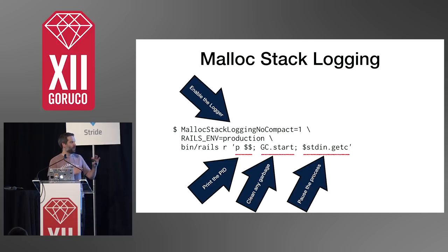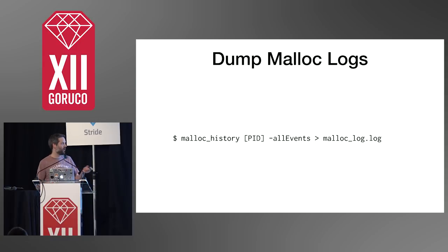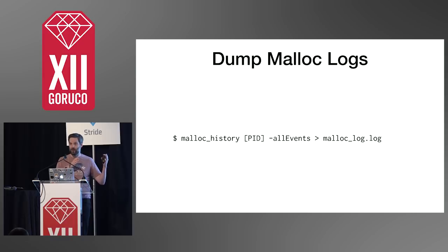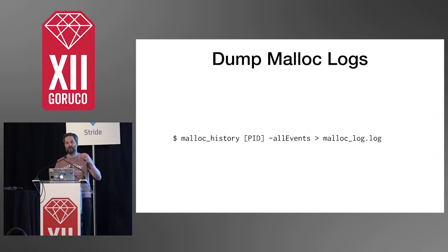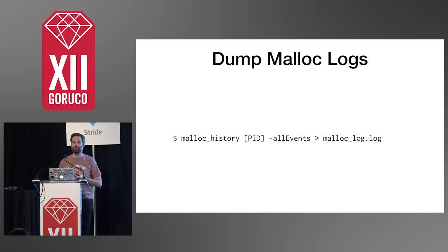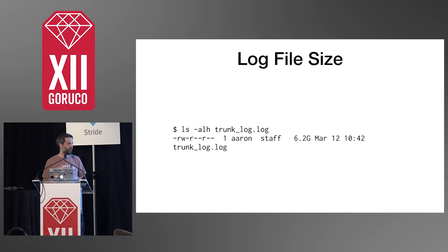Start this up, pause the process, and then in a different terminal we dump the malloc logs using a tool called malloc history. We give it a PID and say all events — meaning I want to know about all allocations and all frees that happened in the process — and then dump it out to a log. You need to make sure you have some disk space, because this is just a very basic Rails app and the log is actually a little over six gigs.